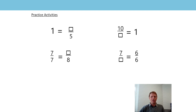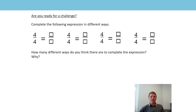So some practice activities for you to do. First, see if you can find the value that can go in the missing box. And for your challenge - very similar to the previous lesson - can you complete the following expression in different ways? You'll notice each has the fraction four fourths and then missing boxes. Think about the different ways you can complete those expressions, and then think how many different ways there are and why. Have a go at those questions and we'll go through them at the beginning of the next lesson.